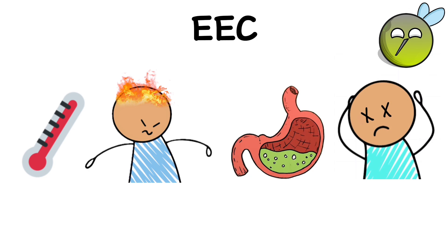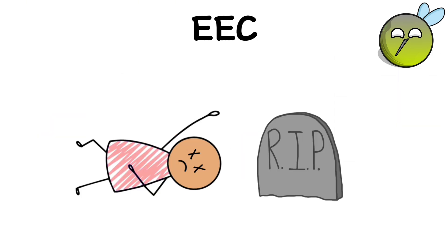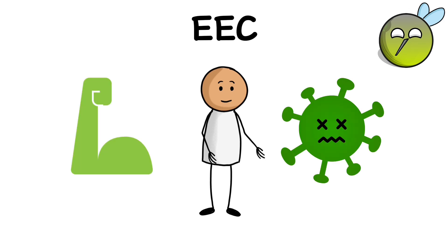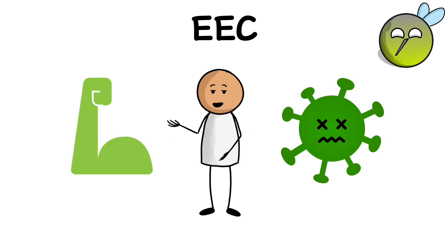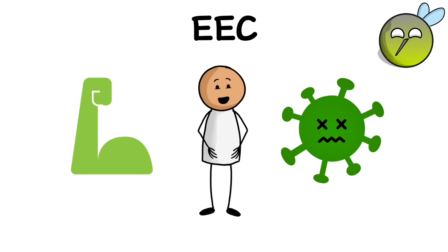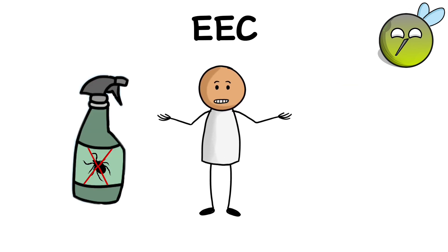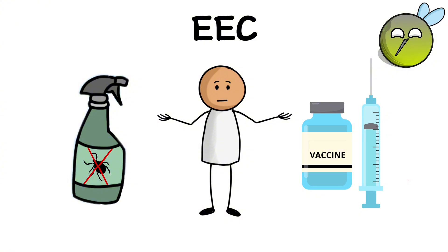In severe cases, paralysis and death can occur. Treatment of viral inflammation of the brain caused by EEE includes symptomatic therapy to relieve symptoms and maintain organ function. Prevention includes the use of anti-tick repellent, wearing protective clothing, and avoiding wooded or suburban areas during periods of tick activity.